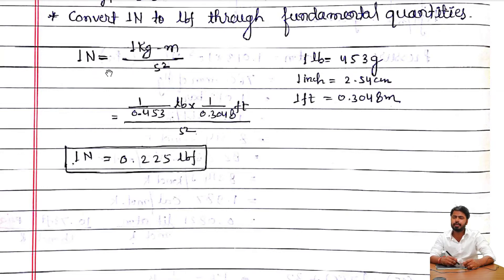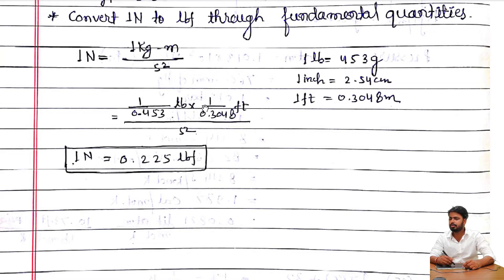To convert units — for example, if someone asks you to convert 1 Newton to lbf using fundamental quantities, you must know how to do that. 1 Newton equals 1 kg·m/s². Using the conversion where 1 meter equals 1 foot divided by 0.3048, if you calculate you will find that 1 Newton equals approximately 0.225 lbf.